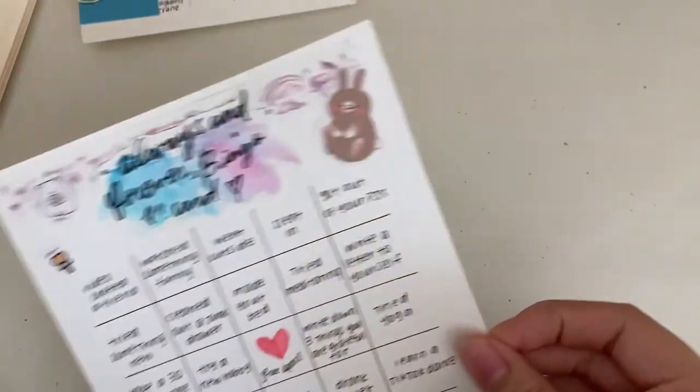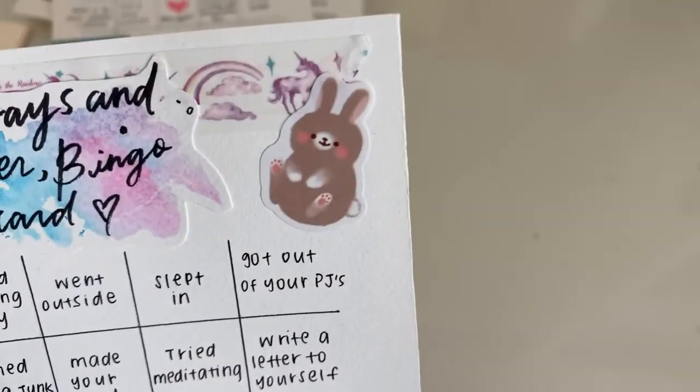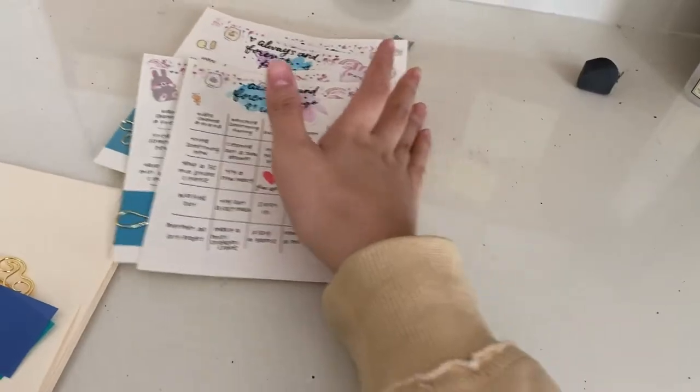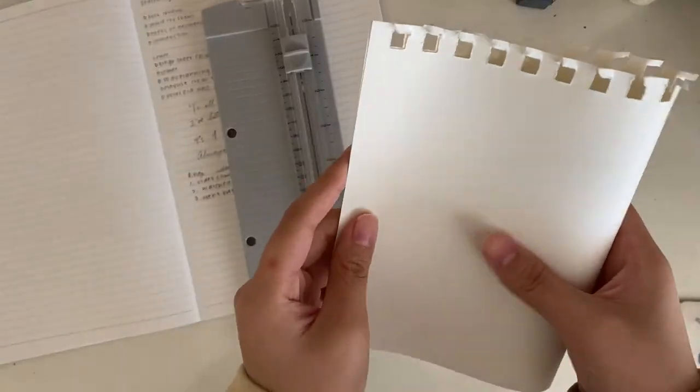On the sides I decorated these, this one is a Daiso sticker and then I also added some Sumikko Gurashi along with some washi tape in the back. And that's basically the finished look of our bingo cards.